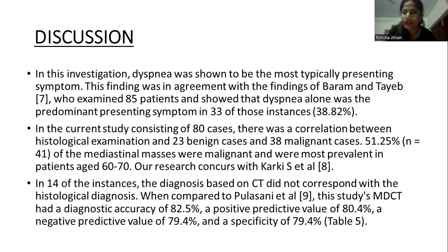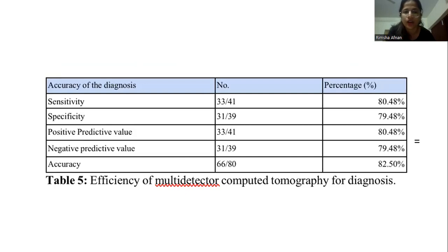In this investigation, dyspnea was shown to be the most typically presenting symptom. There was a correlation between histological examination and 23 benign cases and 38 malignant cases, but in 14 instances the diagnosis based on CT did not correspond with the histological diagnosis. The sensitivity of the study was about 80.4%, specificity was 79.4%, positive predictive value was 80.4%, negative predictive value was 79.4%, and the total accuracy of the study was 82.5%.